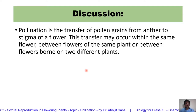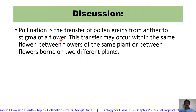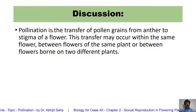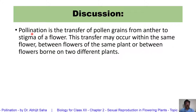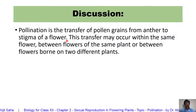Let us start with the definition. What is pollination? Pollination is the transfer of pollen grains from the anther to the stigma of a flower. In sexual reproduction, after formation of gametes, the next step is transfer of the gametes. So pollination is the transfer of pollen grains from the male part to the female part.